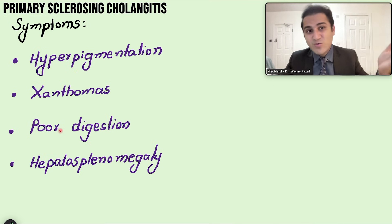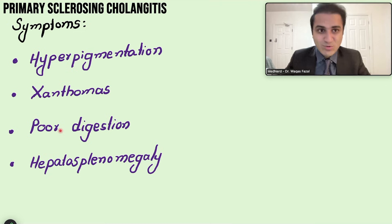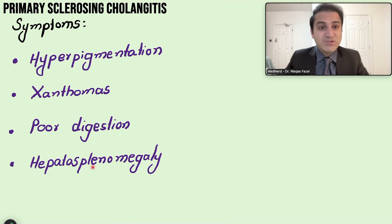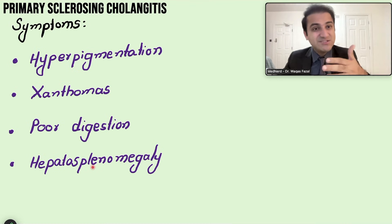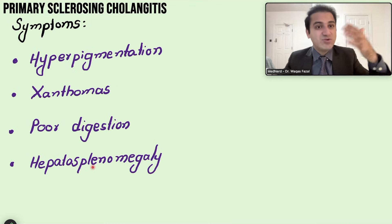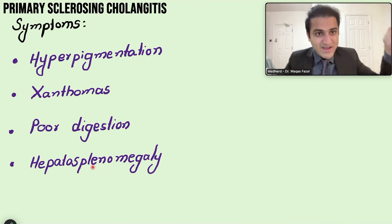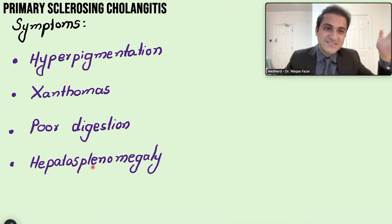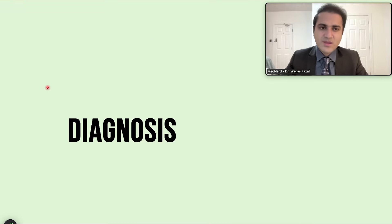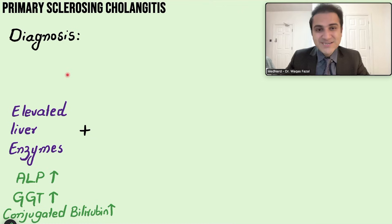Patients are therefore at risk of osteoporosis from vitamin D and K deficiency. Liver damage leads to cirrhosis, causing portal hypertension and splenomegaly, initially presenting as hepatosplenomegaly. In later stages, the liver shrinks.